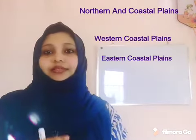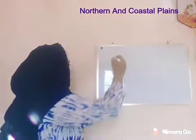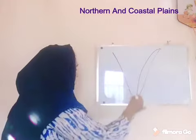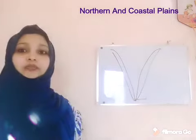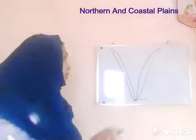The western coastal plain and the eastern coastal plain both stretch from Gujarat to West Bengal. Both coastal plains — the eastern and the western — meet at the southernmost tip of mainland, Kanyakumari.